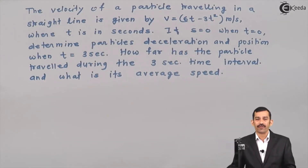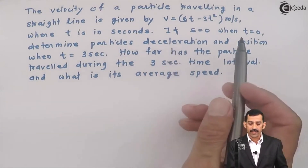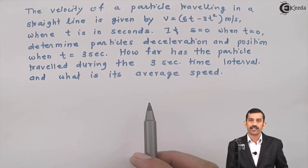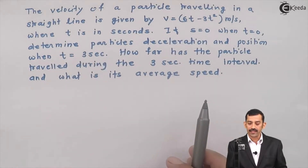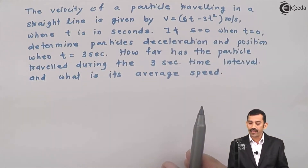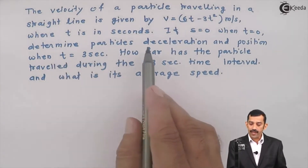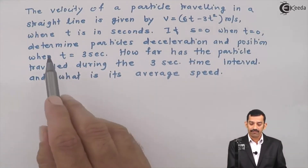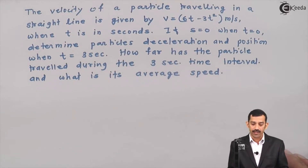To solve a problem on variable acceleration, the velocity of a particle traveling in a straight line (rectilinear motion) is given by v = 6t minus 3t², where t is in seconds. The boundary condition is: s = 0 when t = 0, meaning initially the position is 0. We need to determine: the particle's deceleration and position when t = 3 seconds (Part 1), how far the particle has traveled during the 3-second time interval (Part 2).